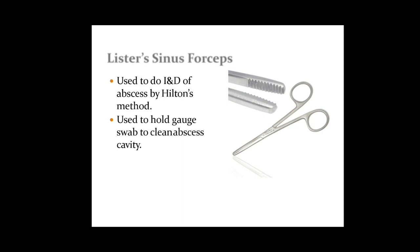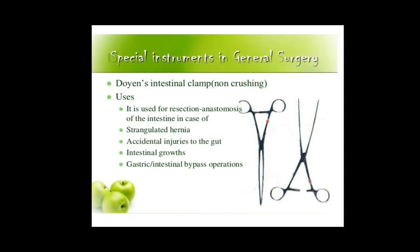Alligator forceps have a 45-degree angle grip and a small set of serrated jaws at the tip. At this tip you can see there is a 45-degree angle of the grip, so it will hold any object. For example, if there are any foreign bodies in the ear or nose, these forceps can be inserted, hold that foreign body, and remove it.